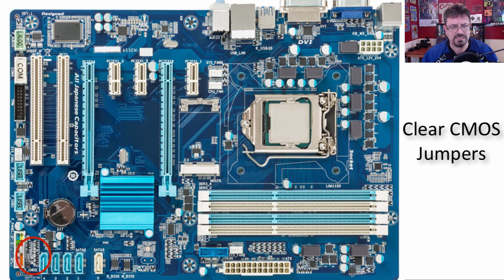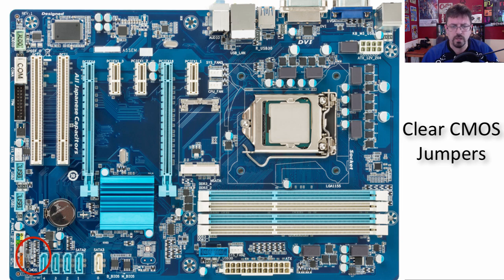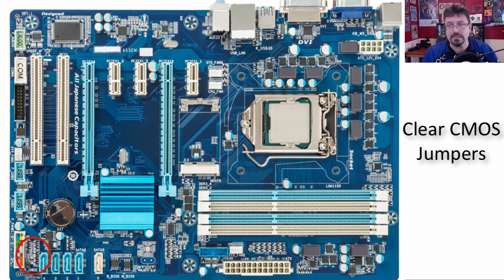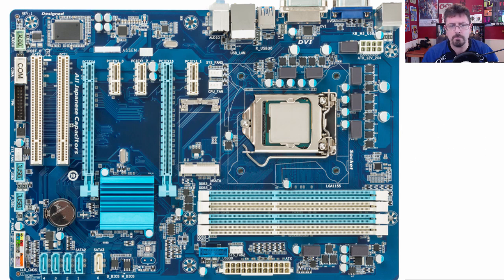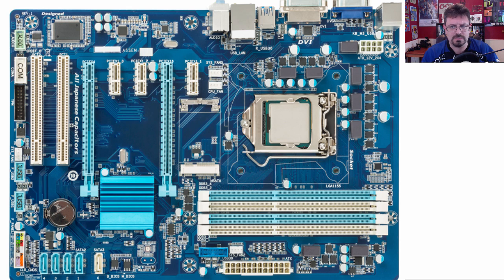Over here we have a clear CMOS jumper. You can configure things in your BIOS, so if you put a password on your BIOS and can't remember it, or you mess something up in your BIOS, you can go to that clear CMOS jumper and manually set it to clear whatever you did, allowing you to go back to previous settings. Some more expensive motherboards have nicely labeled buttons to clear and reset your information, but this is just a generic newer motherboard.